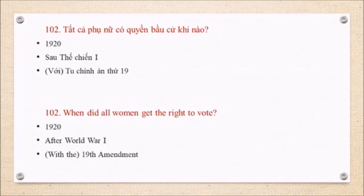Question 102: When did all women get the right to vote? 1920. After World War I. With the Nineteenth Amendment.